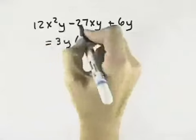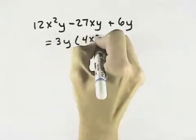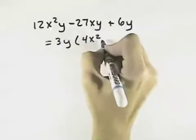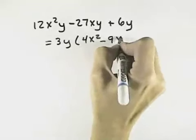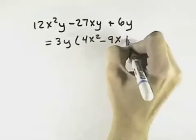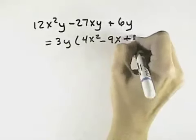So dividing 3y out of the first term, we're left with 4x squared. If we divide 3 out of the second, we get minus 9 and x, and then we divide the y out. And then if we divide 6y by 3y, we're left with 2.